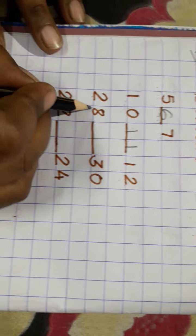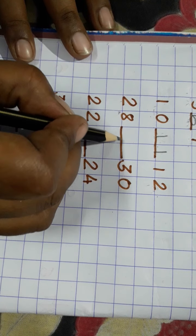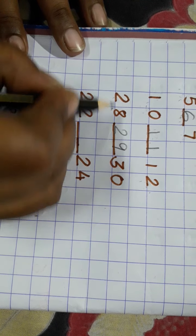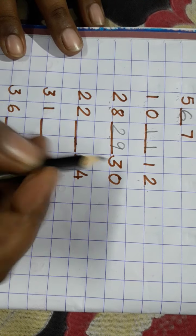28. What comes after 28? 29. What comes before 30? 29. 28, 29, 30.